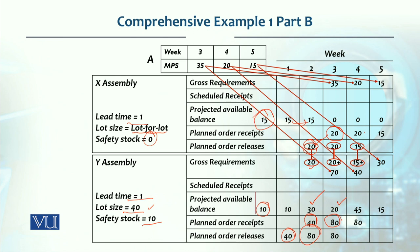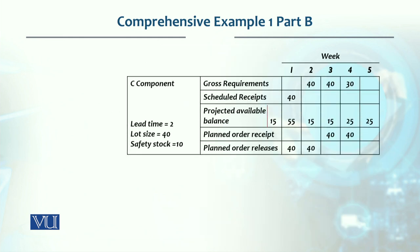For week four, we need 55 units. We already have 20. If we order one lot (40), we get 60 total, which gives 60 minus 55 = 5 ending inventory. But since safety stock of 10 must be maintained, we cannot accept that. So we must place an order for two lots (80 units). With 80 received plus 20 on hand = 100 minus 55 gives us 45. From that 45, we use 30 in week five, leaving ending inventory of 15, which equals our safety stock. Y assembly MRP is now complete.